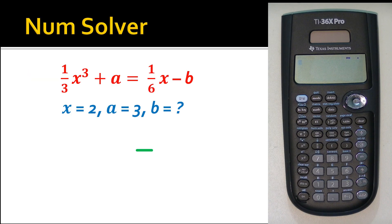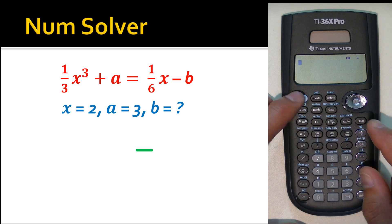For example, here's an equation: one-third x cubed plus a equals one-sixth x minus b. I'm giving you x equals two and a equals three, and we need to find what b equals. This is relatively simple — you could probably do it in two or three tries — but let's show how to do it with the calculator, especially for more complex equations.